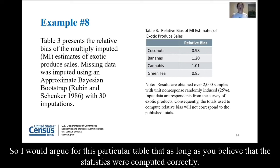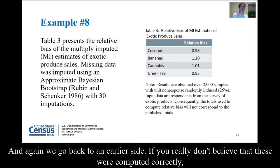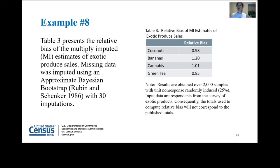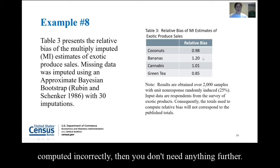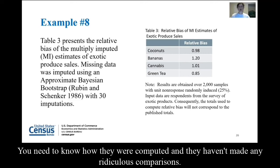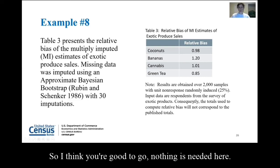For this particular table, as long as you believe the statistics were computed correctly — and if you don't, you can ask the author to show you their computations or their code, which is absolutely fine — if you have no reason to suspect these statistics were computed incorrectly, then you don't need anything further. They've given you all the background information you need to know how they were computed, and they haven't made any ridiculous comparisons. So I think you're good to go — nothing's needed here.